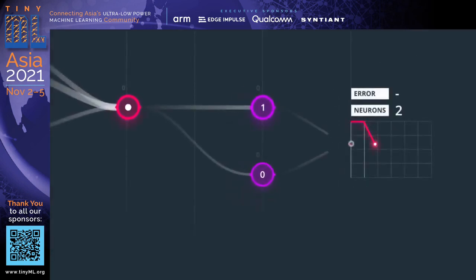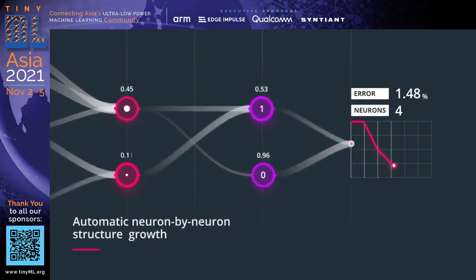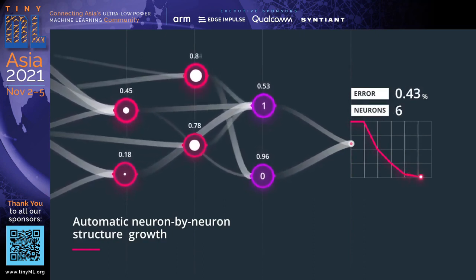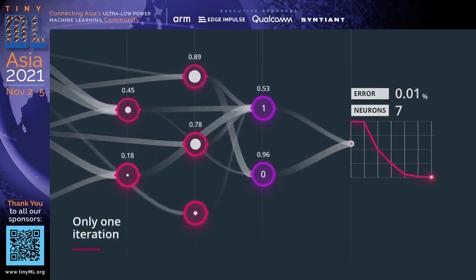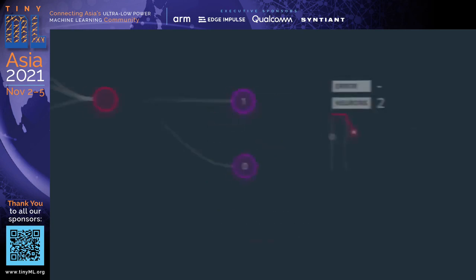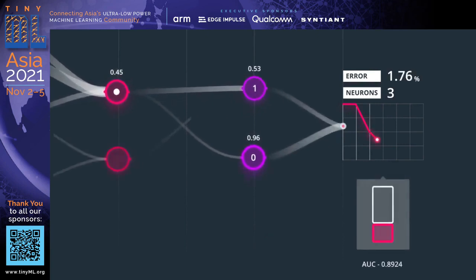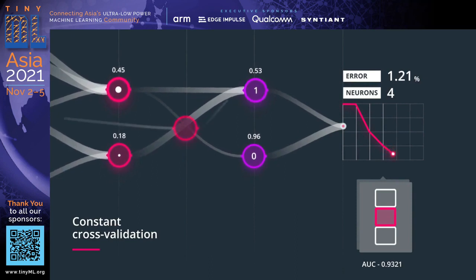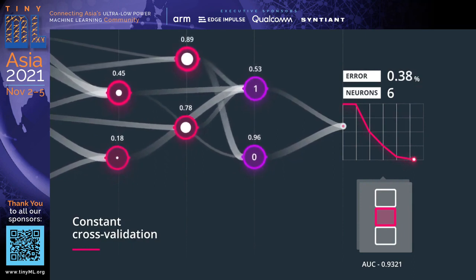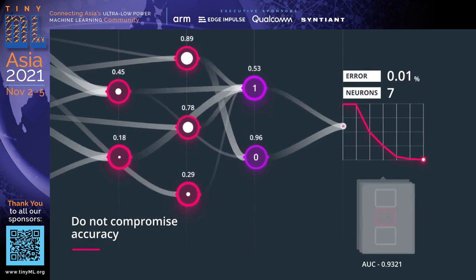The Newton platform enables models to be built automatically, neuron by neuron, starting from learning general features and moving toward identifying the most specific ones. This allows selection of a model of almost any level of precision and size in a single iteration. Newton eliminates the time-consuming multidimensional manual search for network parameters including number of layers, neurons, type of activation function, batch size, dropout, learning rate, and more efficiently finds the optimal structure. The neuron-by-neuron growth makes it possible for cross-validation to occur progressively, which is typically not feasible with a standard approach. The combination of these characteristics also increases the generalizing capabilities of the model, which allows for creation of compact models without compromising accuracy.